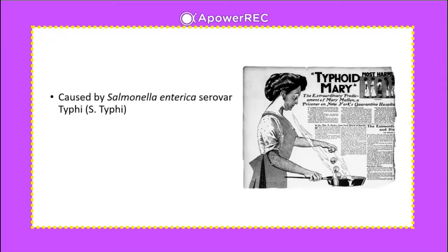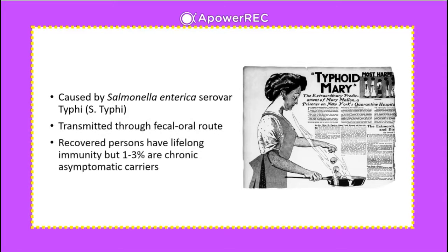Typhoid fever is caused by a special serovar of Salmonella enterica, serovar Typhi, abbreviated as S. Typhi. It is transmitted through the fecal-oral route. Recovered persons can have lifelong immunity, but 1–3% become chronic asymptomatic carriers, like Typhoid Mary.